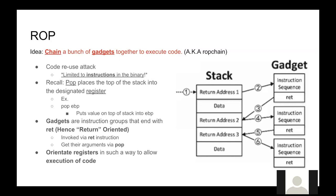If you remember from your 230 class, POP places the top of the stack to a designated register. So when you pop EBP — the base pointer — it'll pop it off the top of the stack into the register EBP. Think of gadgets as instruction groups that end with a return. Hence that's where the return part in Return-Oriented Programming comes from. We're going to be utilizing those return instructions. We get the arguments from POP — as you pop stuff off the stack, it gets saved into the registers. That's what gadgets are essentially doing.